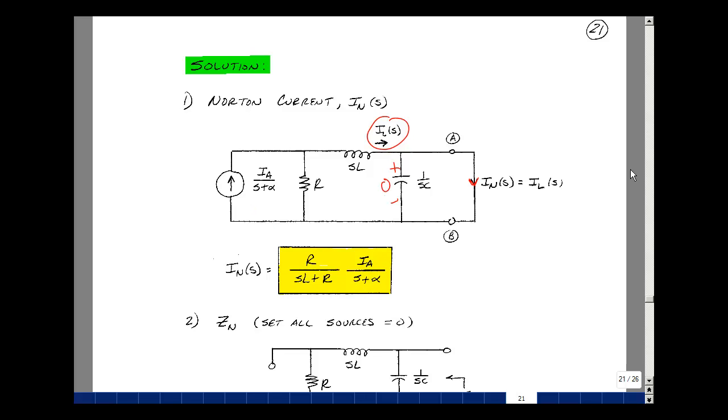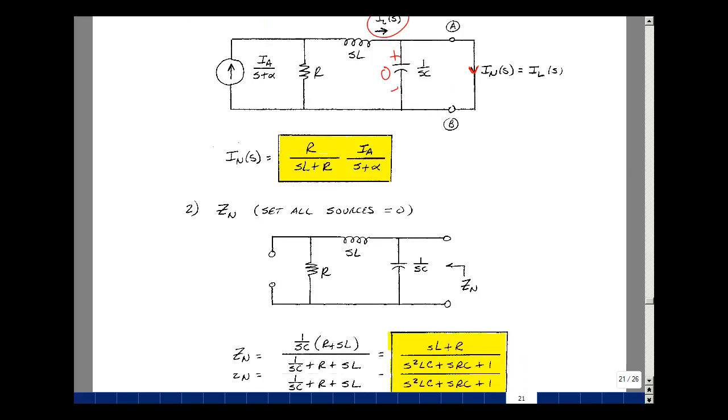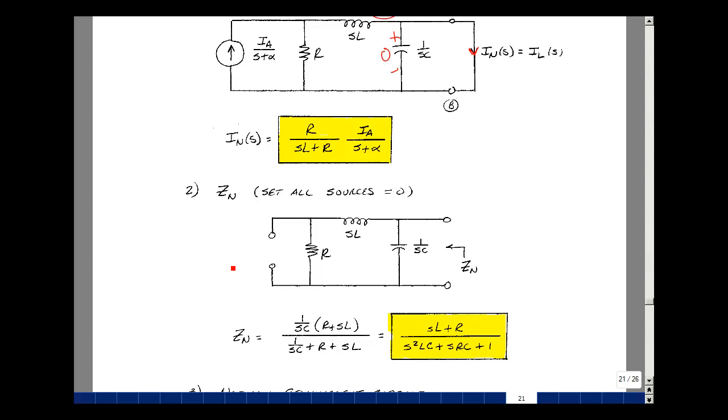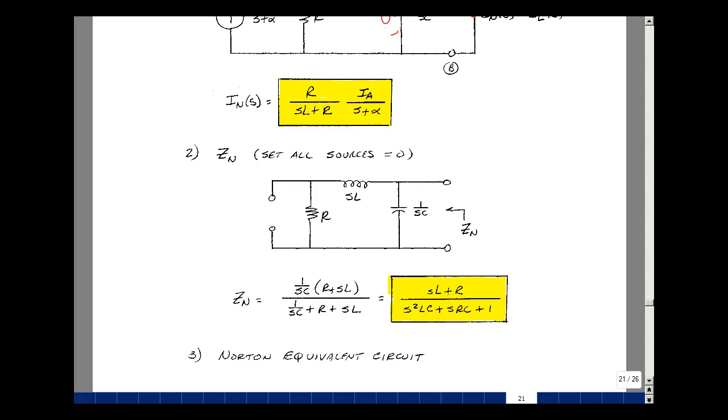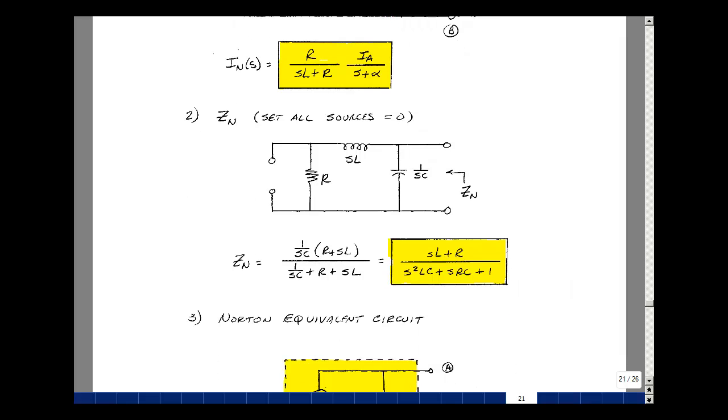Then to find the Norton impedance, we simply set all the independent sources equal to zero and look back from the output terminals. The current source is an open circuit, and so we have an open circuit here, and looking back we see the sL in series with r share the same current, and all that's in parallel with the capacitor whose impedance is 1 over sC. So our Norton equivalent impedance would be the parallel combination of 1 over sC with r plus sL, so product over the sum.